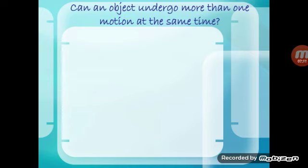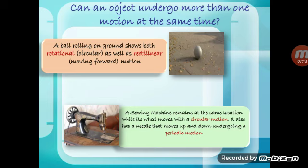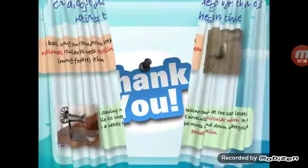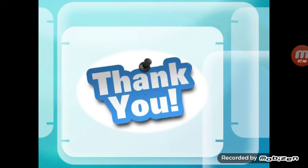Can an object undergo more than one motion at the same time? Yes — a ball rolling on the ground shows both rotational and rectilinear motion. Another example is a sewing machine: it remains at the same location while its wheel moves in a circular motion and its needle has a periodic motion. There are various such examples in daily life that show multiple motions.